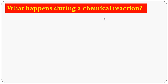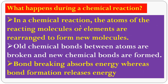What happens during a chemical reaction? In a chemical reaction, atoms of the reacting molecules are rearranged. Hydrogen combines with oxygen to form water. Hydrogen and oxygen are rearranged to form a new molecule — the product, water. Old chemical bonds between atoms are broken and new chemical bonds are formed. Bond breaking absorbs energy, whereas bond formation releases energy.